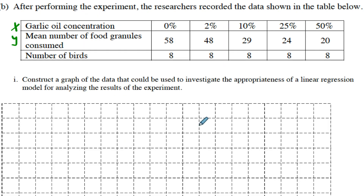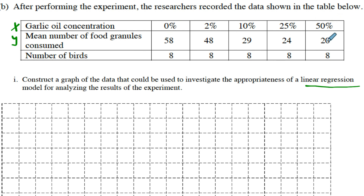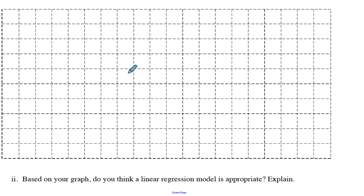For the next part, they say 'here's some data that came from the experiment — construct a graph.' The key is that you are looking for linear regression possibility, so we're looking to do some linear regression. With linear regression, you need an x and a y variable, which comes from a scatter plot. They have three rows of numbers; notice the last row is just the number of birds — that's the same for all of them, so I don't need to plot that. What I'm really interested in is how much garlic oil concentration there was and what the response from that was. The response variable goes on the y-axis, and the x will be our garlic oil concentration.